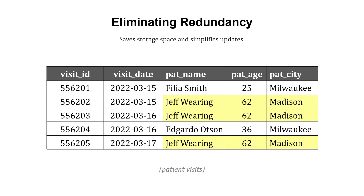We've got duplicate information, which causes us to use more storage, and it also complicates updates. So if that patient, Jeff Waring, was to change cities from Madison to Chicago, every visit in the table for them — we'd have to change their city, and that can cause issues.